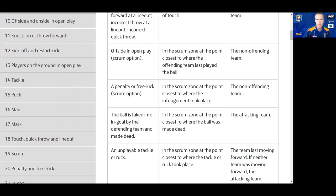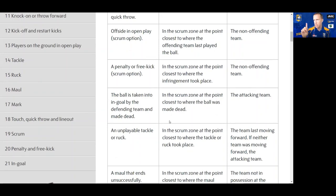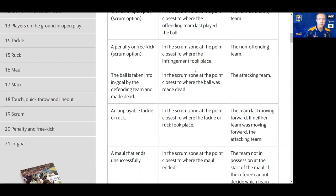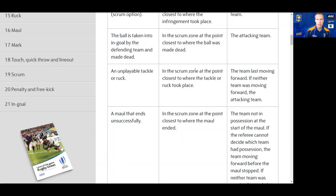For an offside penalty where a scrum option is taken, the mark is where the defending team last played the ball, or the nearest player to the ball carrier. For a penalty or free kick where the team chooses a scrum, the scrum is at the place of the penalty or free kick within the scrum zone. If a defending team takes the ball into their in-goal and makes it dead, the scrum is in the scrum zone closest to where the ball was made dead, and the attacking team throws in.